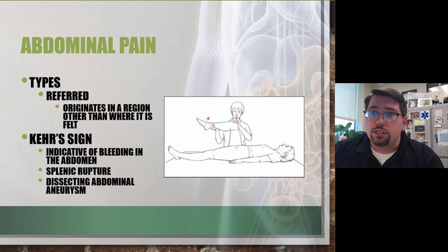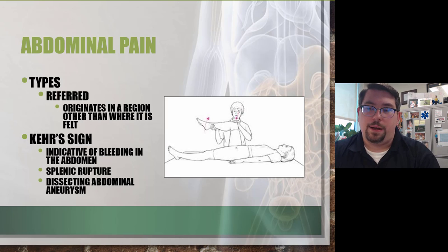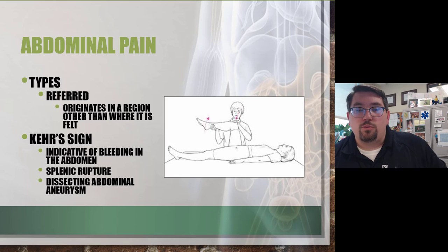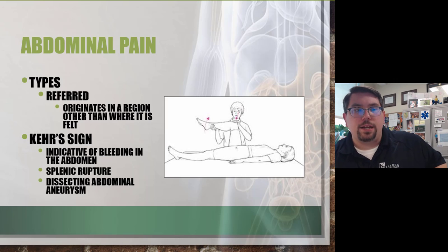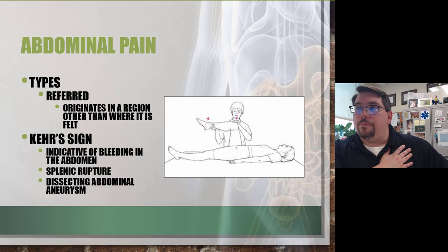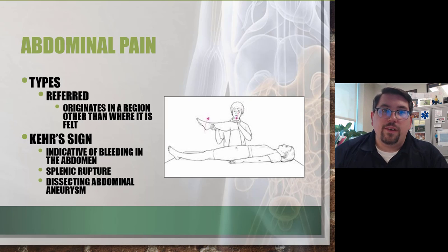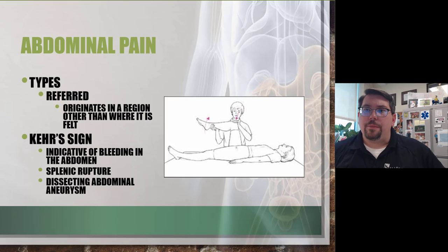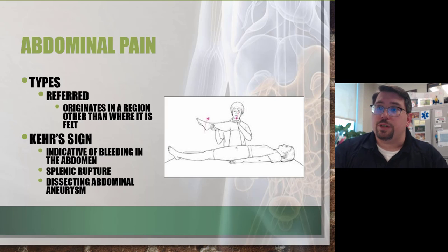Kehr's sign indicates bleeding in the abdomen. Located in the upper left-hand quadrant — right behind your stomach is your spleen — when you palpate that quadrant, you get referred pain up to the shoulder. That's a positive Kehr's sign. Another test involves moving the patient's leg up to about 90 degrees; if they get significant upper left abdominal pain, we're more concerned about a spleen injury or rupture.